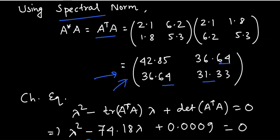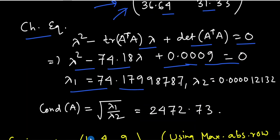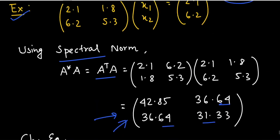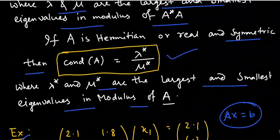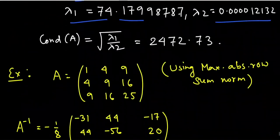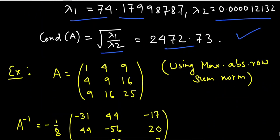Now we find the eigenvalue of this matrix using the characteristic equation: λ² − trace(AᵀA)·λ + det(AᵀA) = 0. This gives: λ² − 74.18λ + 0.0009 = 0. Solving, we get λ₁ and λ₂. By the spectral norm formula, the condition number = √(λ₁/λ₂), which gives 2472.73.